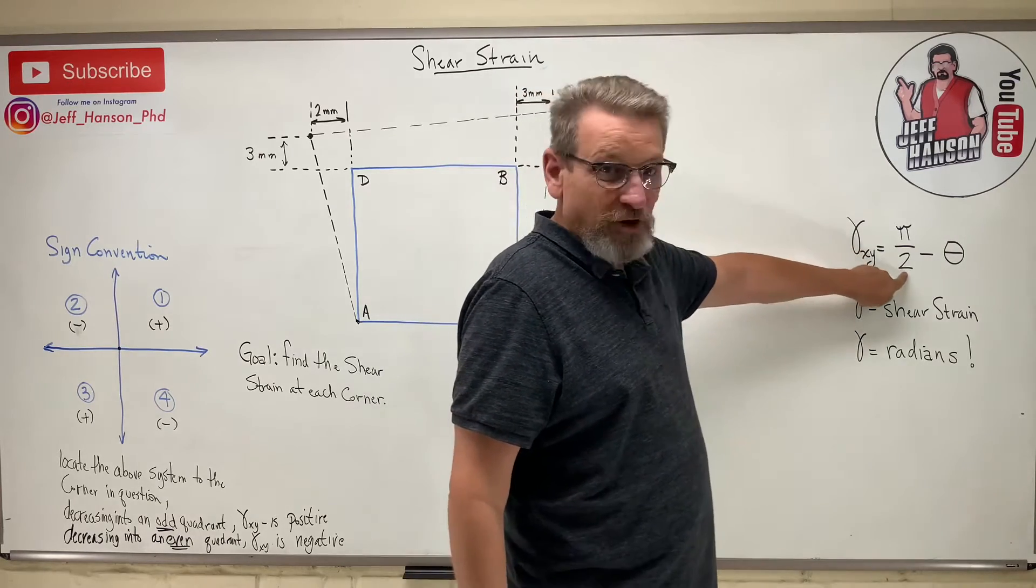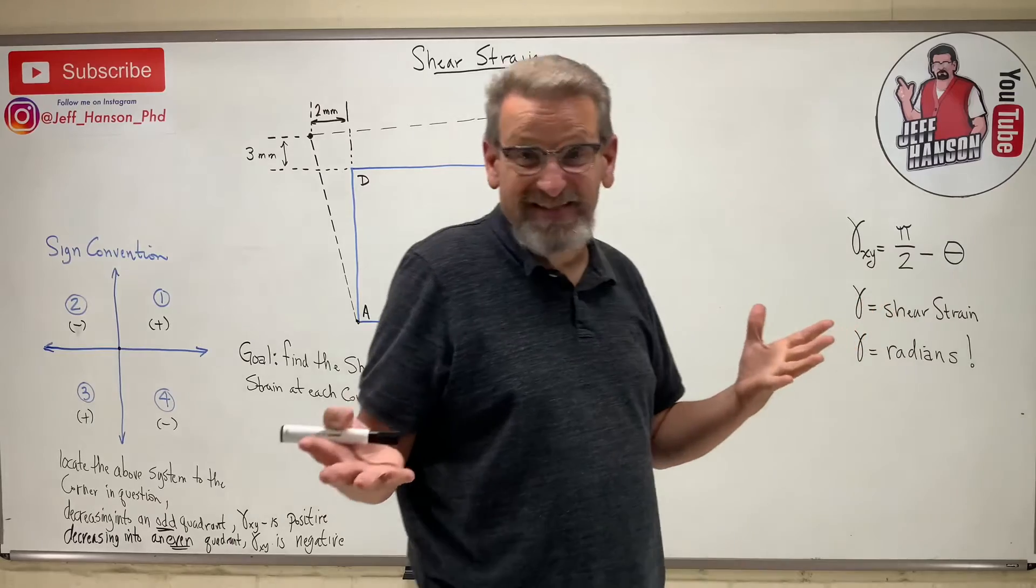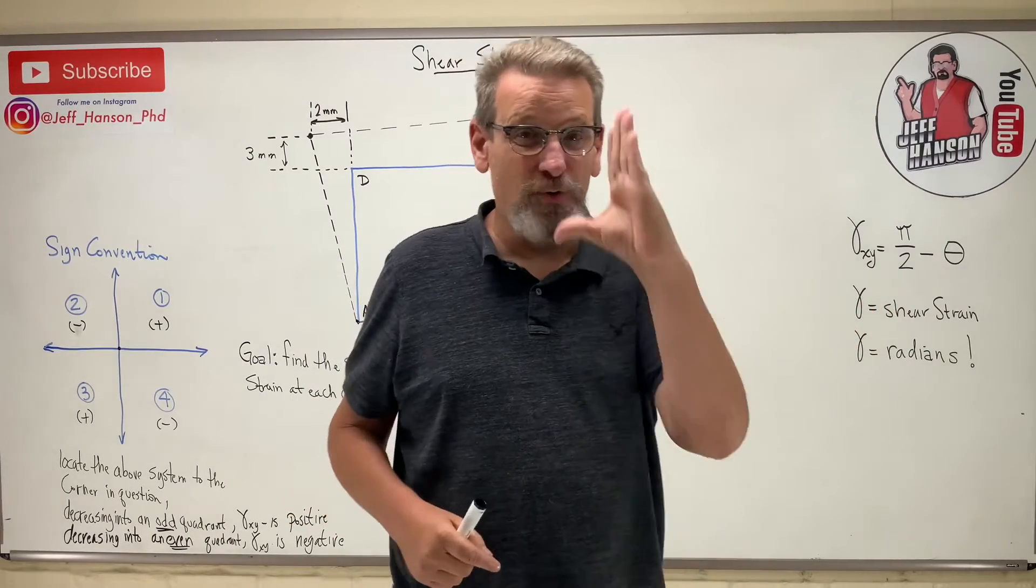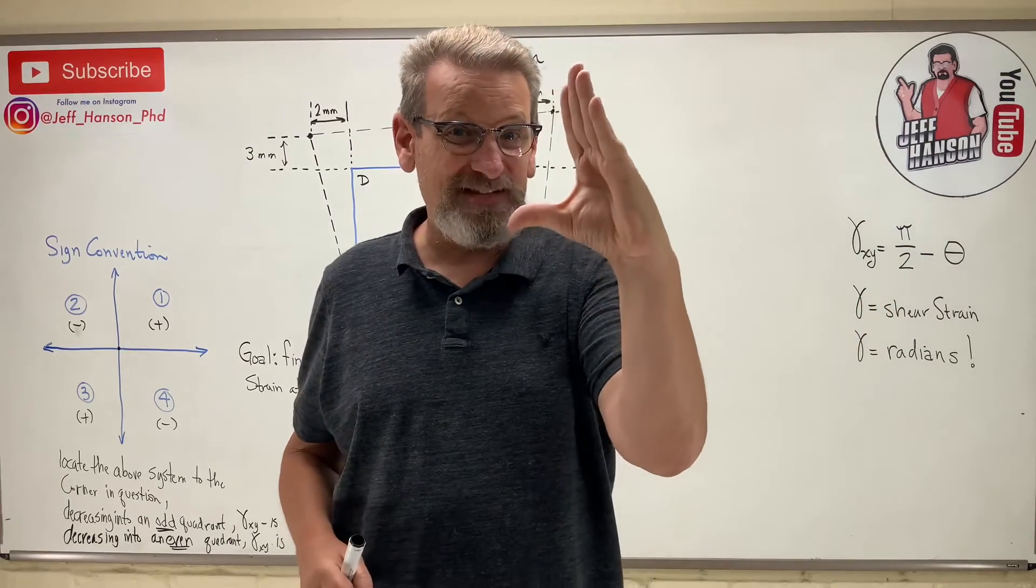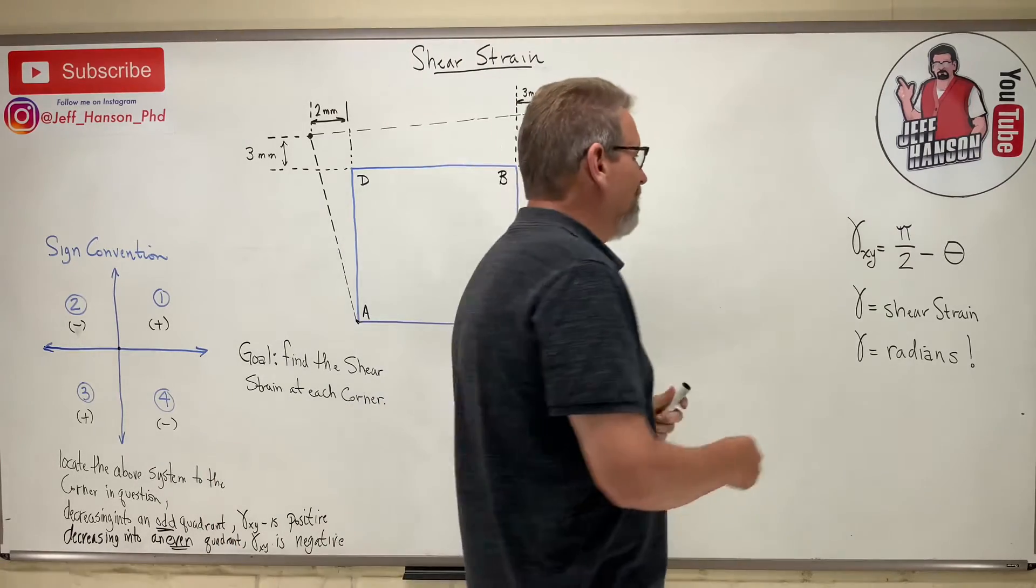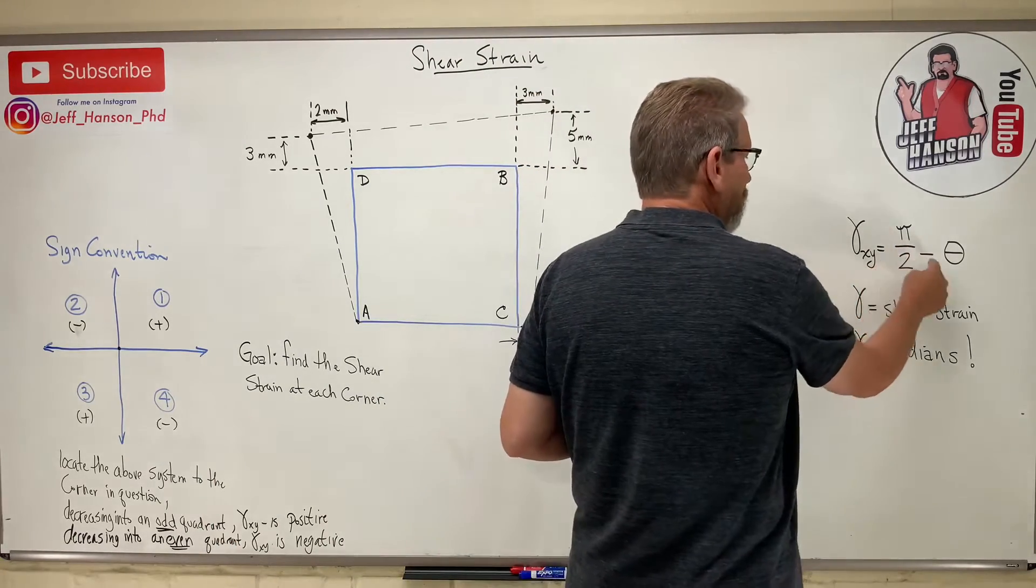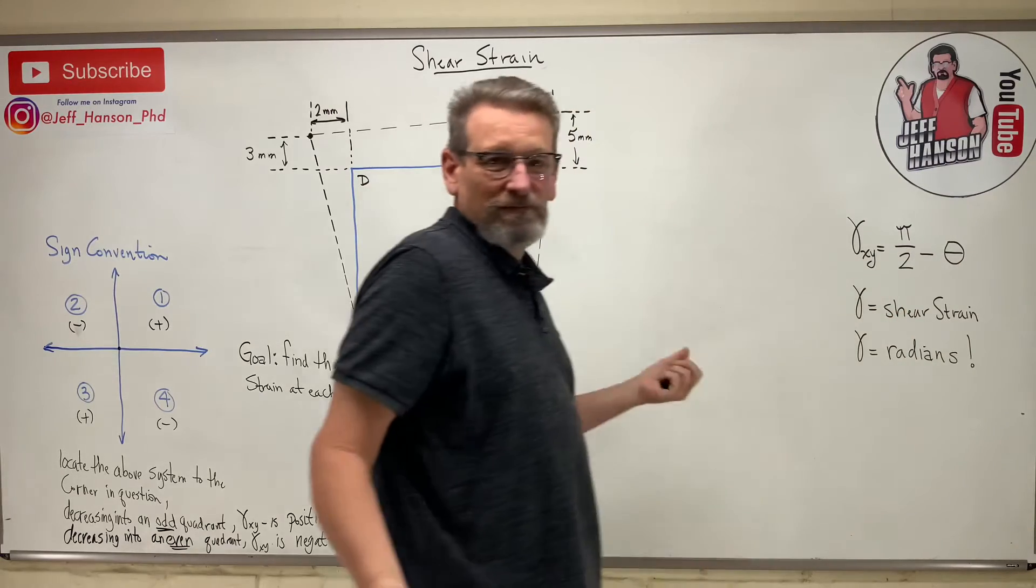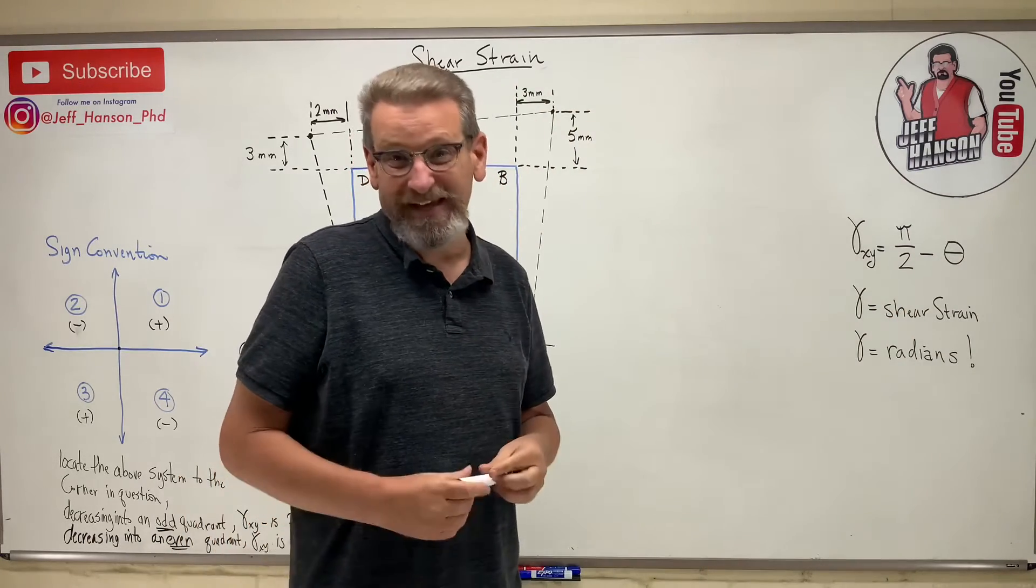How do you find it? Well, it's just pi over two. Hey, that's 90 degrees, right? And remember what I just drew on there. I started off at 90 degrees and then as it's strained, it's something less than 90. So it's pi over two minus whatever the new angle is.